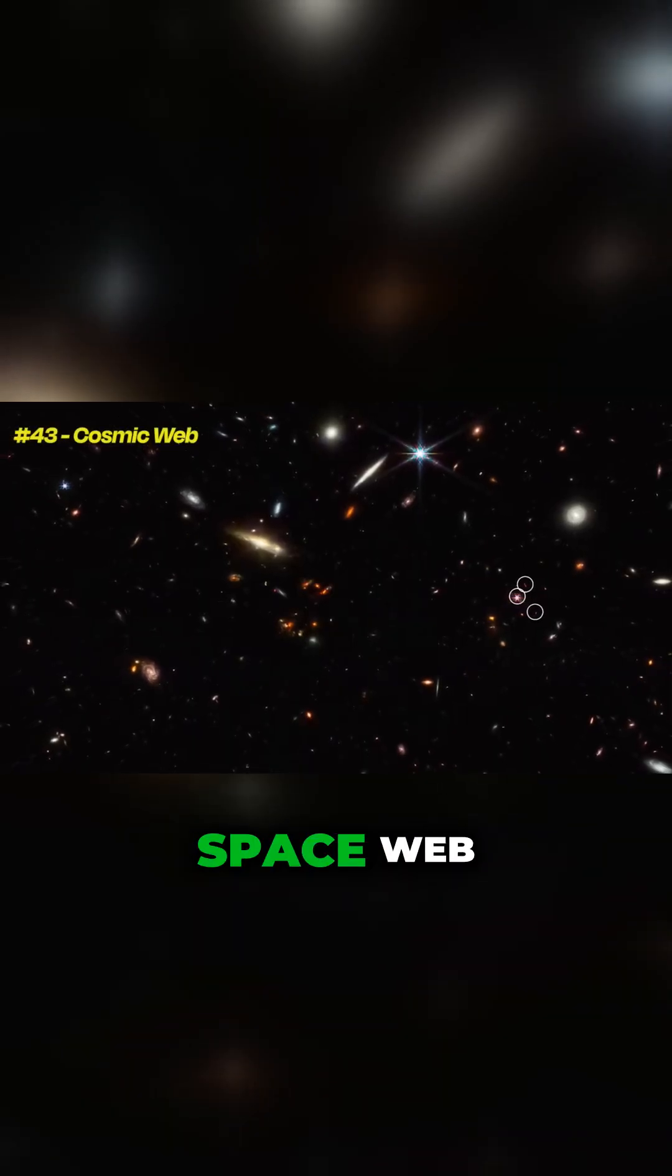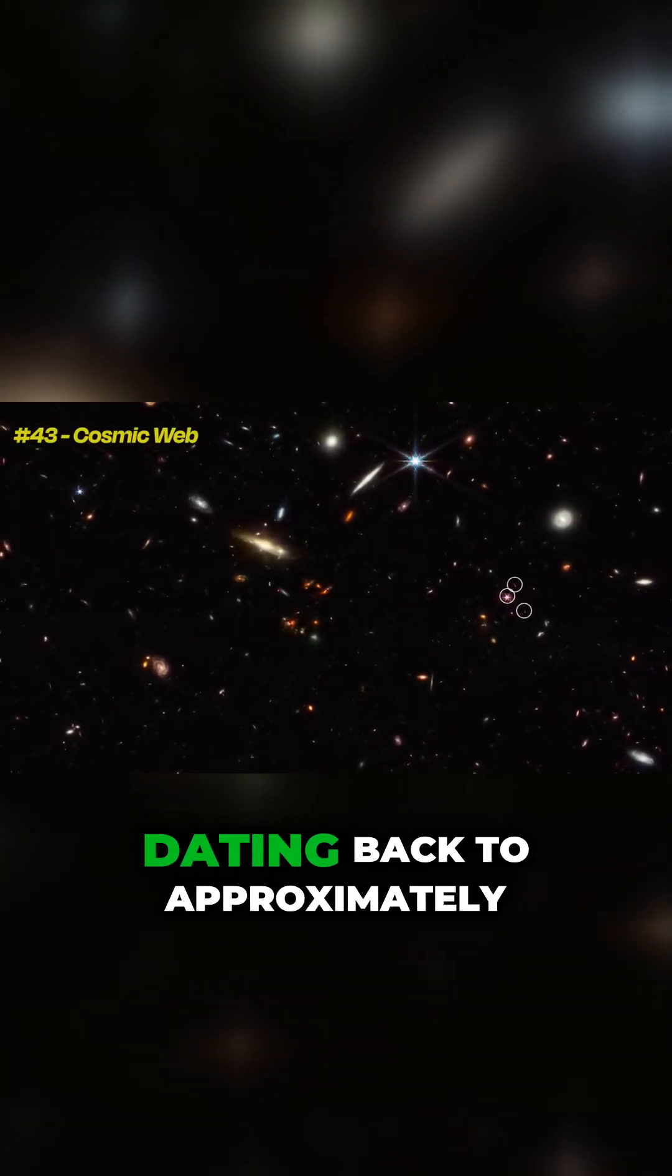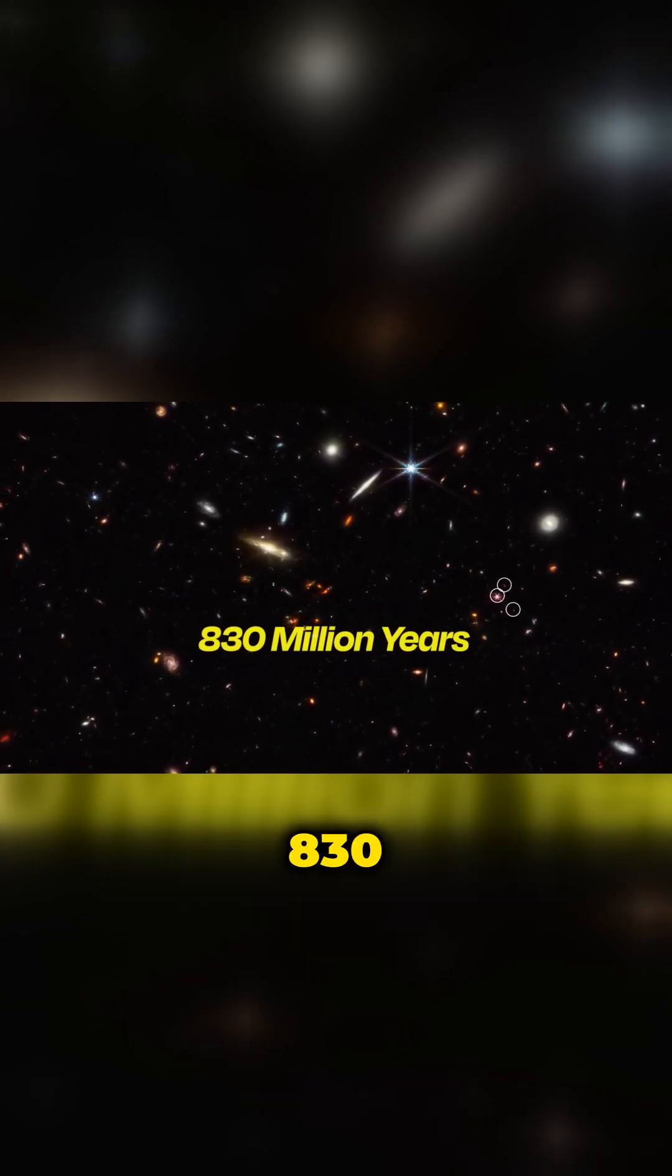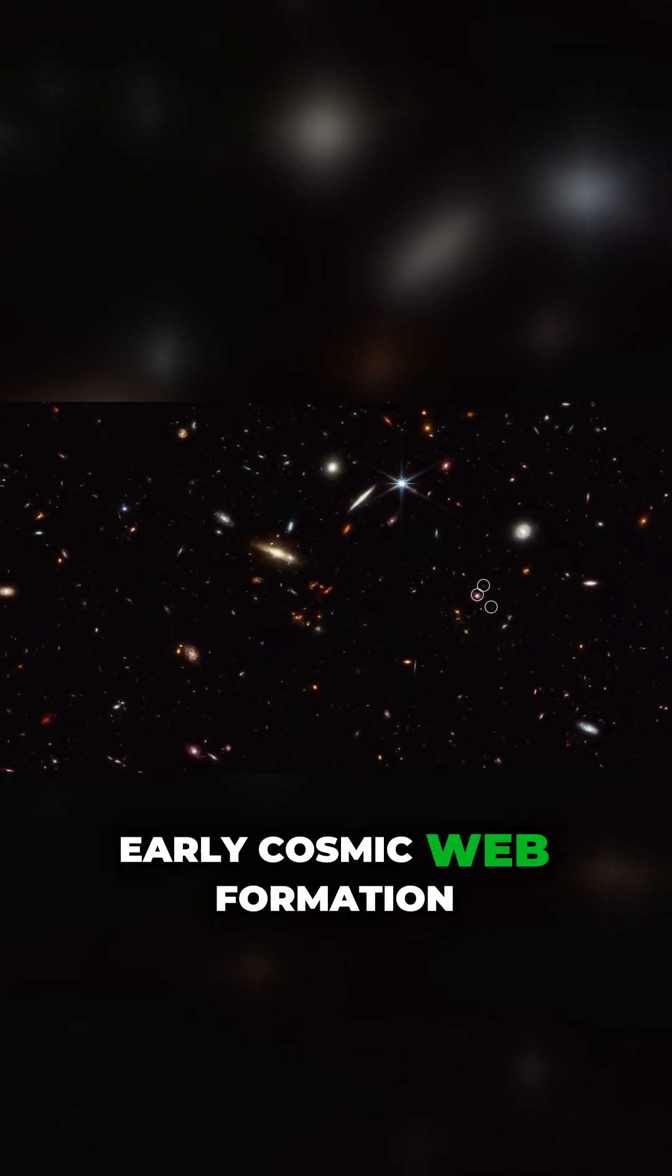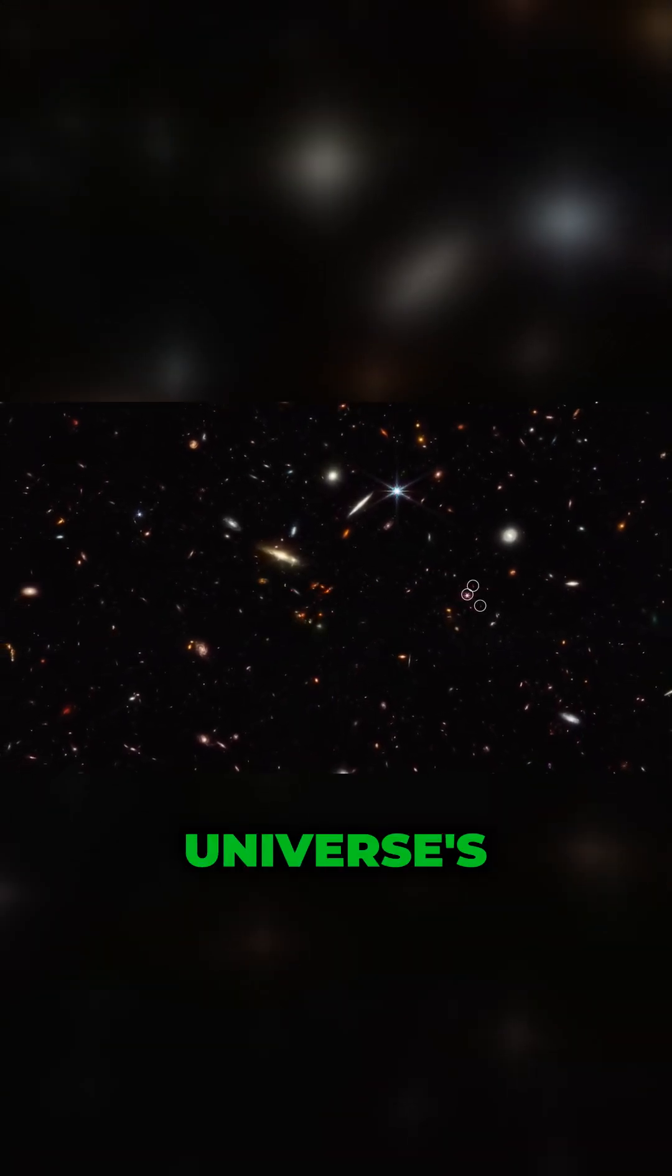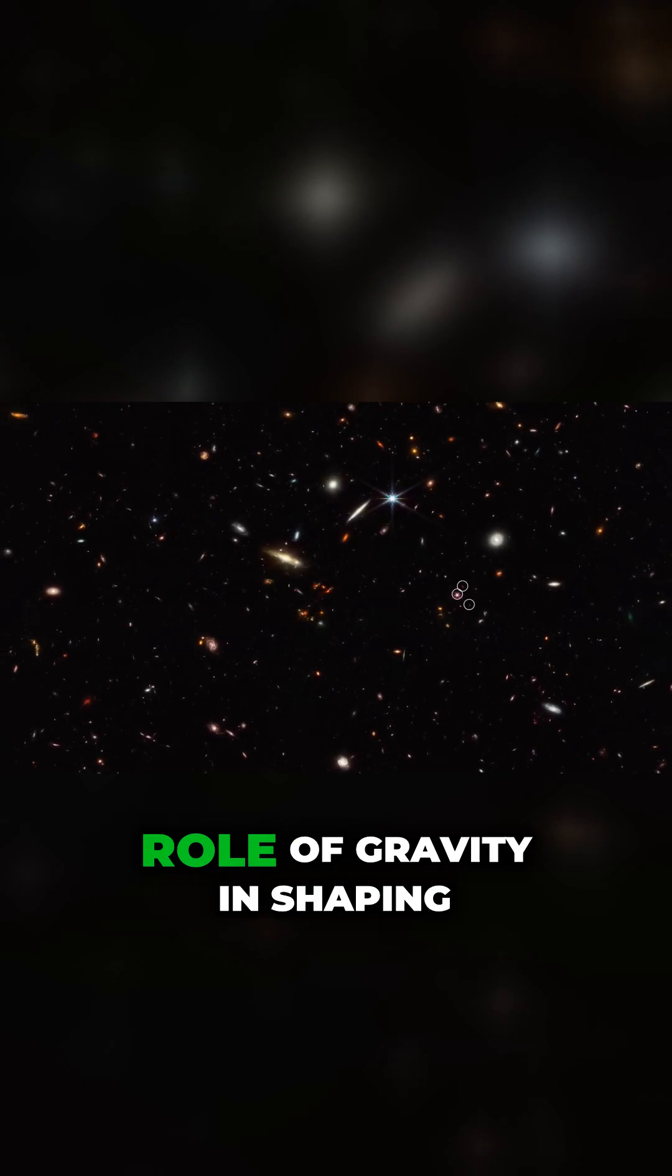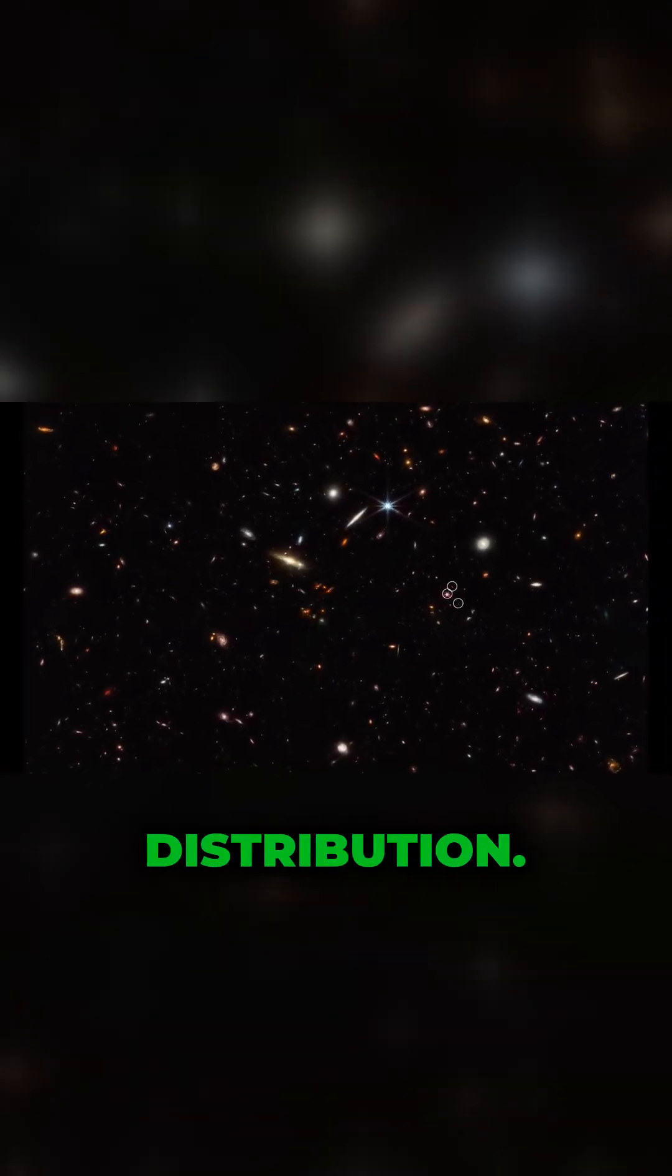James Webb has discovered a space web comprising 10 galaxies dating back to approximately 830 million years after the Big Bang. This early cosmic web formation offers insights into the universe's large-scale structure and the role of gravity in shaping matter distribution.